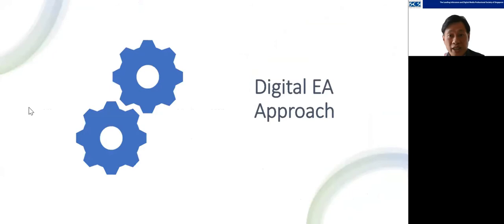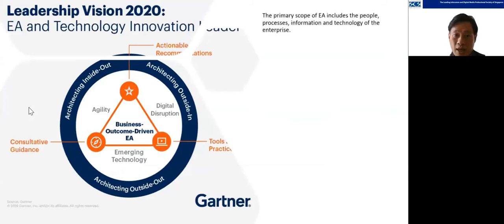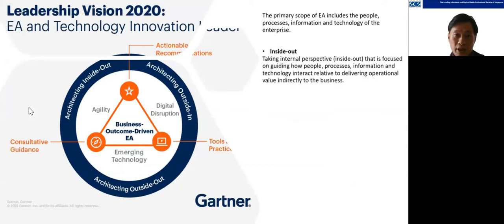I'll talk about the digital EA approach and share some of my experience. This is from the Gartner EA and Technology Innovation chart. The primary scope of EA is people, process, and IT — EA is not technical design, neither is it application design. There are three types of architecting discussed. The first is inside-out.